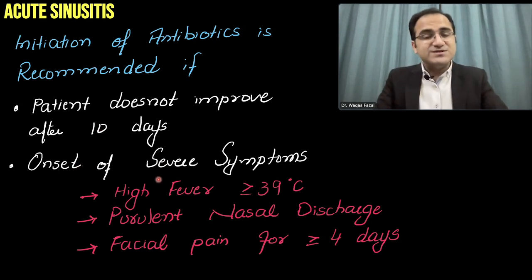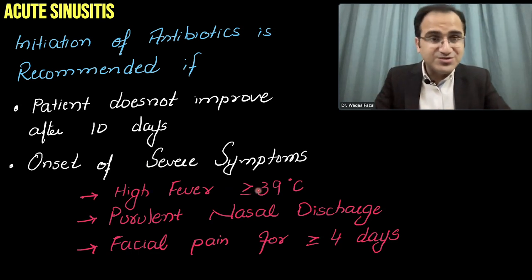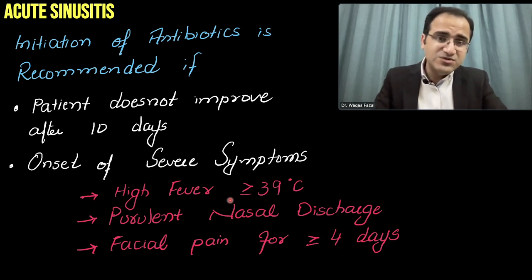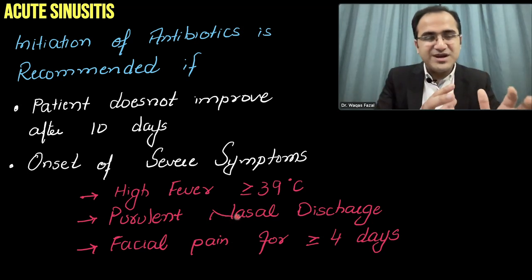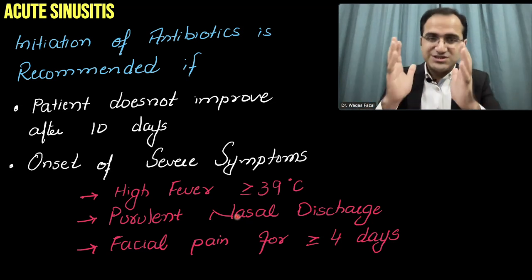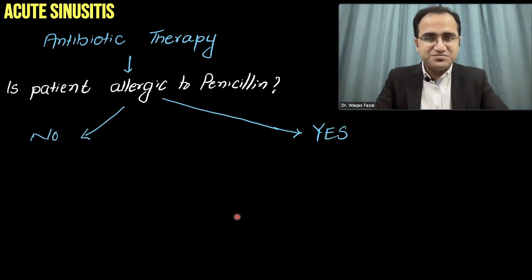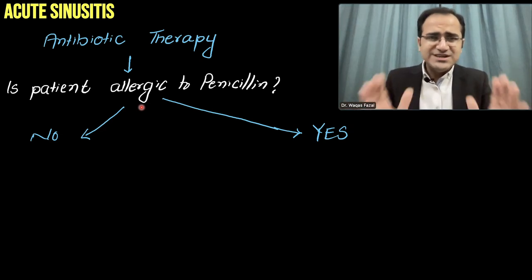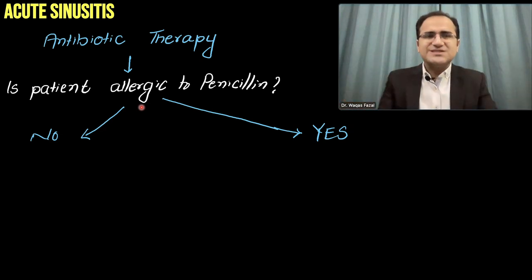Other indications include onset of severe symptoms: high fever greater than or equal to 39°C, purulent nasal discharge, and severe facial pain lasting four or more days, despite supportive care. The antibiotic therapy targets Strep pneumo (not Staph aureus, which is a normal nasal commensal).